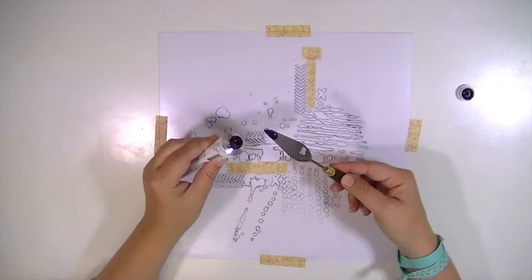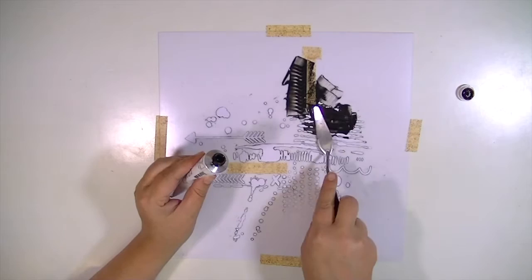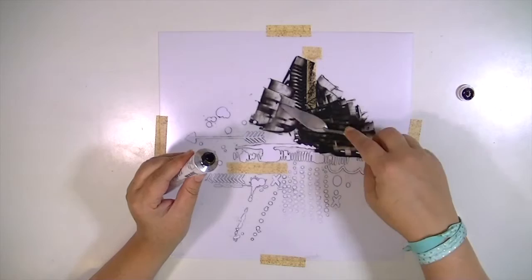You can use all different mediums with a stencil. I like to use this Golden heavy body acrylic paint because it's thicker than regular acrylic paint and it just does a really good job. I found with these kind of intricate stencils that it applies the best when you go in the direction of whatever the pattern is.